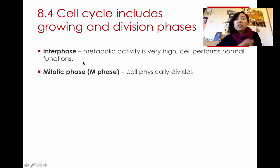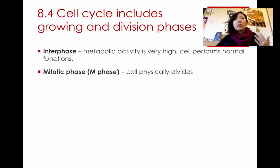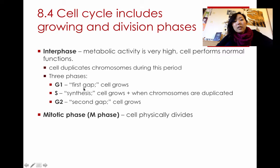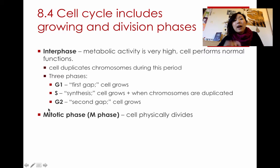In interphase, the cell's metabolic activity is really high — it does all its normal functions, produces proteins, and duplicates its chromosomes. There are three major phases: G1 (first gap) is when the cell continues growing; S phase (synthesis) is when the DNA is actually replicated; and G2 is when the cell continues to grow even bigger. In all three phases the cell is growing, but in S phase the major event is DNA replication.